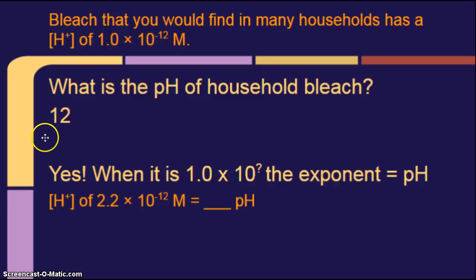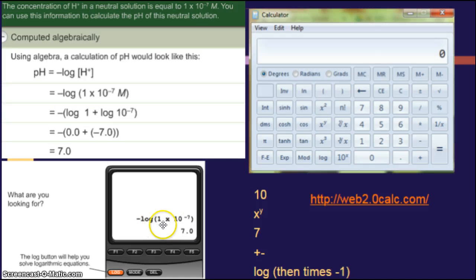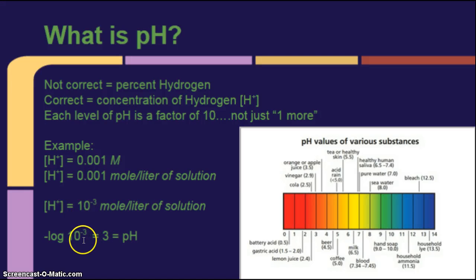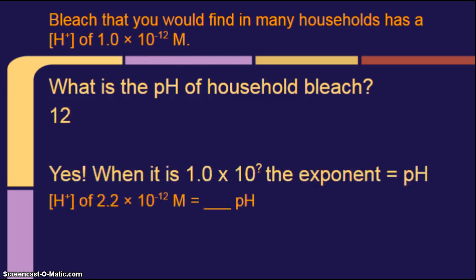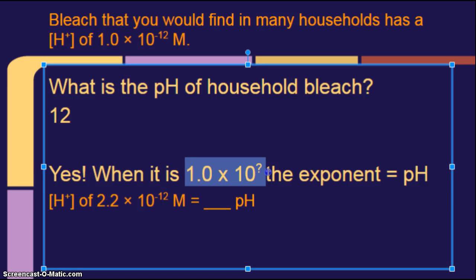So the answer is 12. Hey, check this out. If you have 1 times 10 to the, whatever the exponent is, that's your answer. That's what the pH is. Look at this one. 10 to the negative 3, my pH is 3. 10 to the negative 12, my pH is 12. Alright, so you can get the answer if it's 1 times, but when it's 1 times 10 to the whatever, the exponent equals the pH.